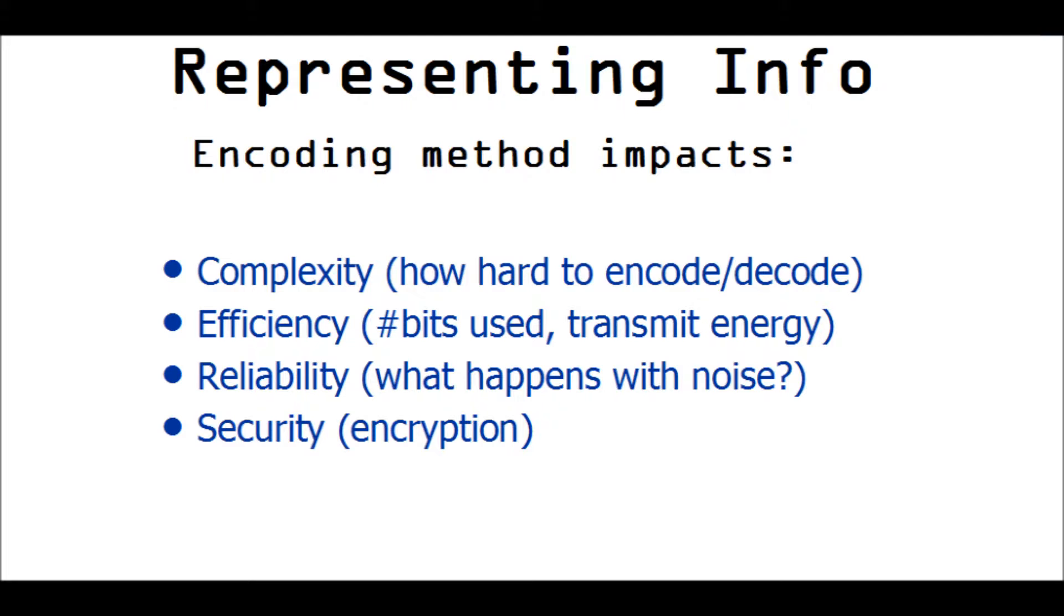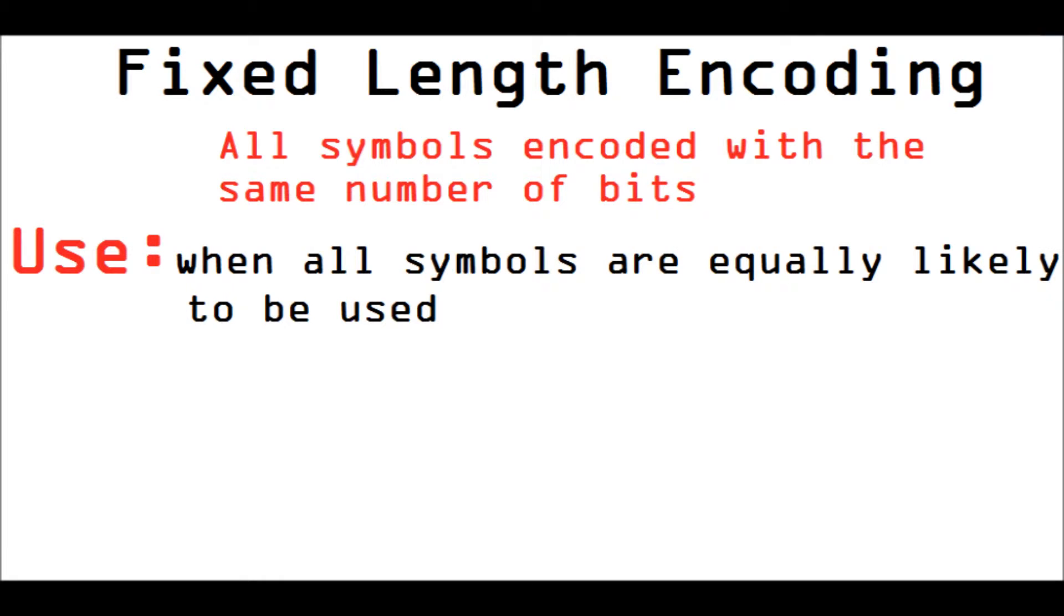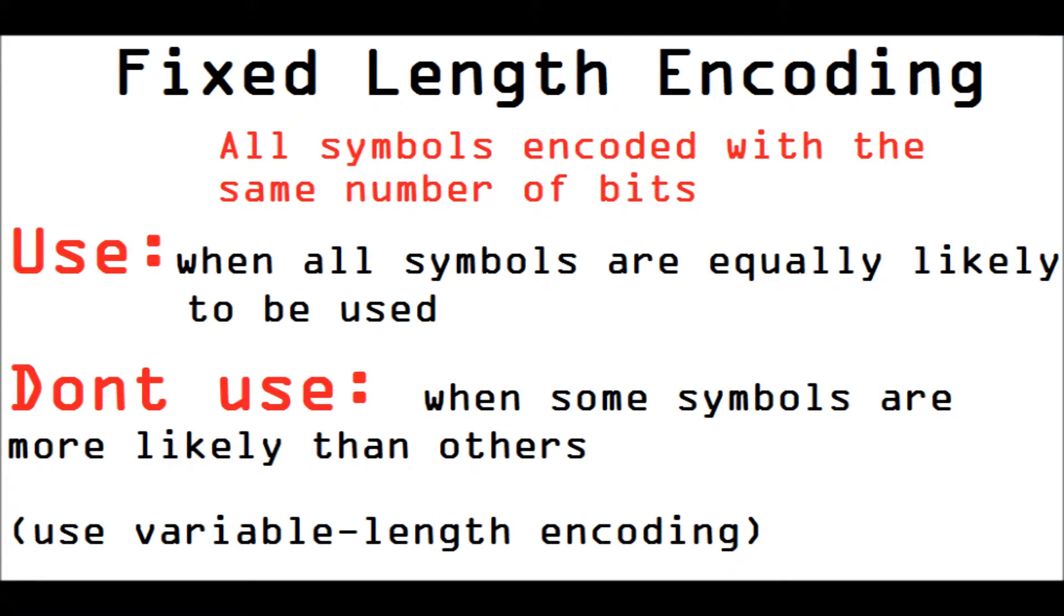One category of encoding is fixed length encoding. All symbols are encoded with the same number of bits. And we choose this when all symbols are equally likely to be used. And we use a different kind of encoding, variable length encoding, when some symbols are more likely to appear than others.